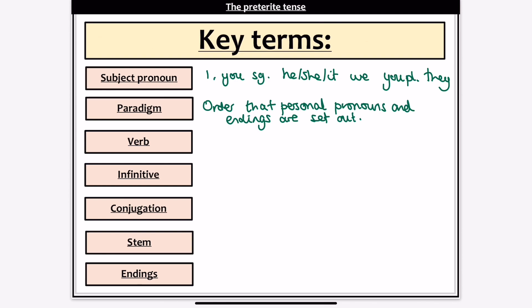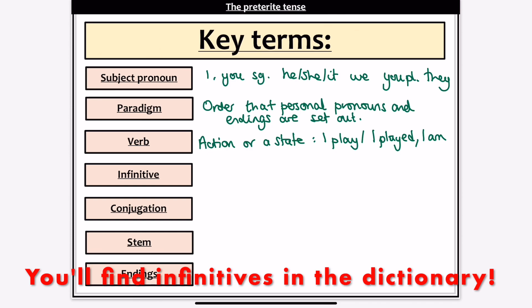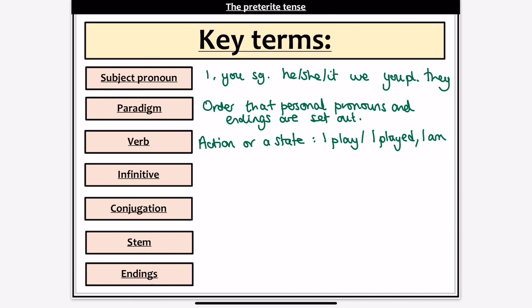We said that a verb was an action or a state — so that could be I play, I played, or I am. Now if we go to a dictionary and look up 'I played', the Spanish we get is not going to be 'I played' — it's going to give us the verb 'to play'. That 'to' form of the verb, the most basic form ending in AR, ER, or IR, is known as the infinitive. Building on that, conjugation is the process of changing the infinitive — removing the AR, ER, IR — to leave our stem, and changing it to show who does the action. So rather than saying 'Jamie to play football', we say 'Jamie plays football'. That process is conjugation.